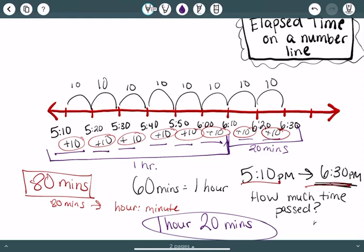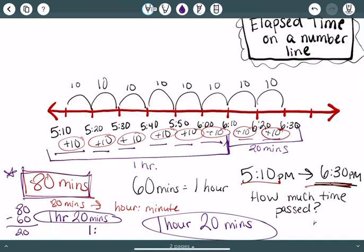Or a way I can do this, if I know that I have 80 minutes here, I can take away the 60 minutes that are in an hour because I know that I have at least one hour. 80 minus 60 is 20. So I have 20 minutes left over, which is one hour 20 minutes. So you can write it as one hour 20 minutes or you can write it as 1:20 for the amount of elapsed time.